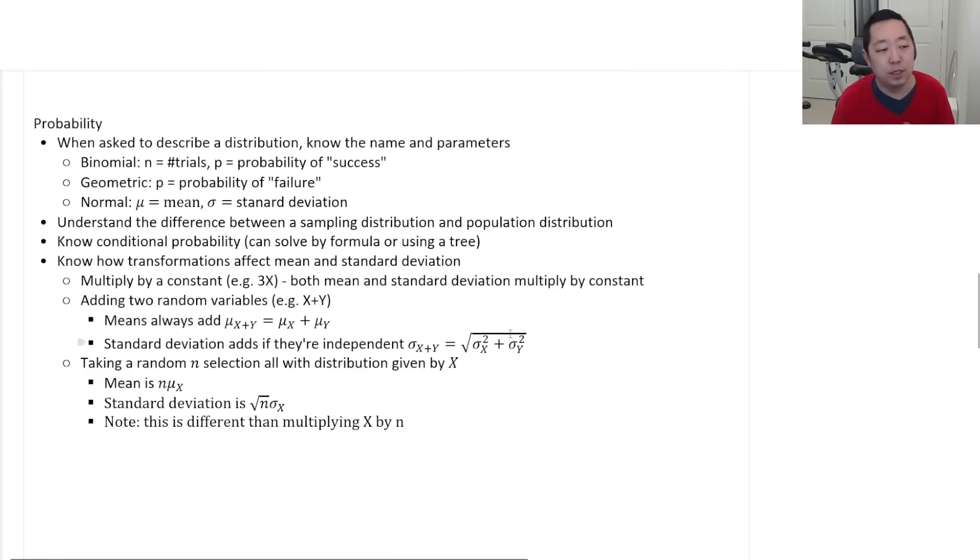Probability. This is a tough topic sometimes, and there's a lot deep in here. So make sure you feel good about probability, but you always get a probability FRQ. So first, when asked to describe a distribution, you need to identify the name of the distribution as well as the parameters associated with that. For example, if I ask you if something's a binomial distribution, know the conditions. What is a binomial distribution? But it's described by the number of trials n and by the probability p.